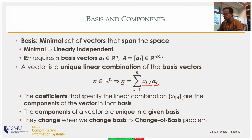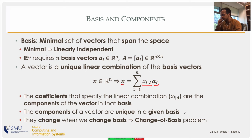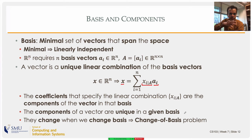A linear combination is unique, which means the components of the vector are also unique. If you have a vector in any space and you have specified the basis, the vector can be written in only one unique linear combination. However, when you change the basis from one set to another, you will get different components.